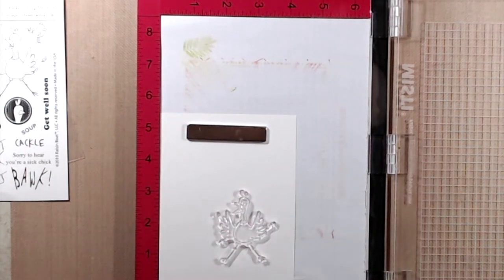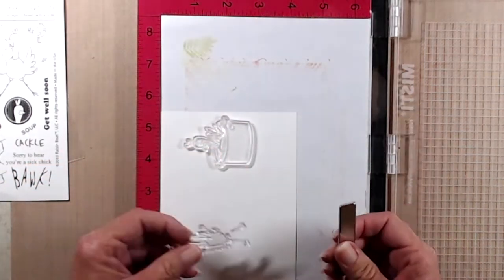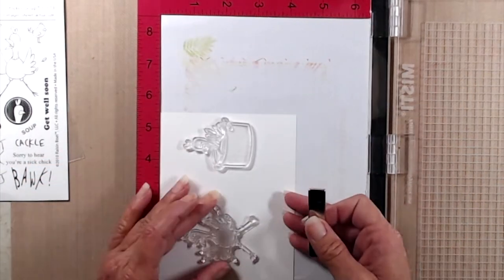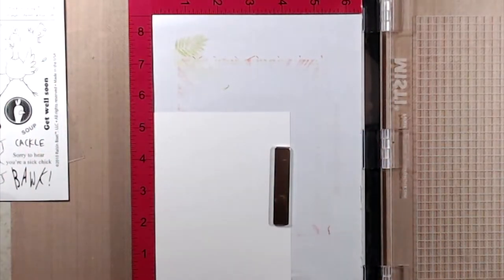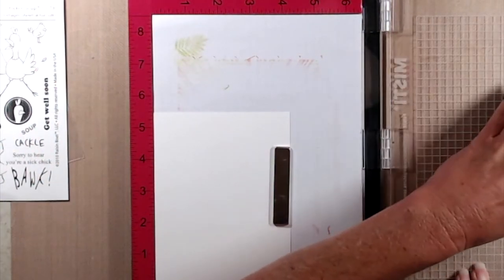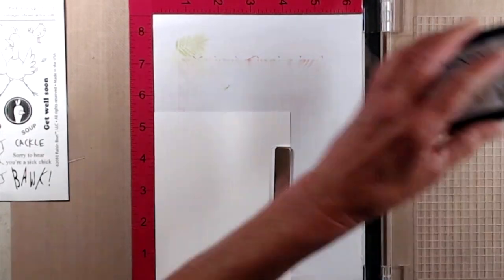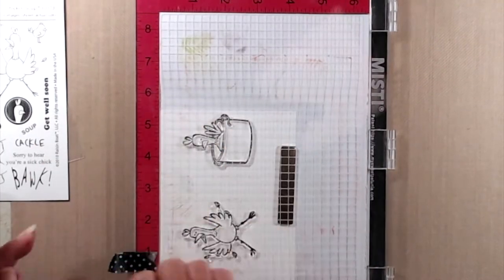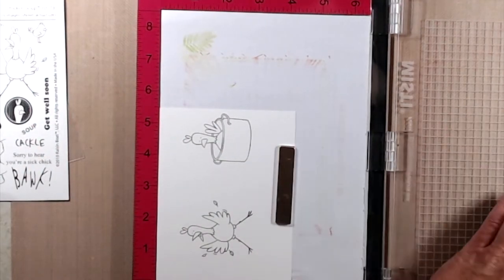After I stamped that background I set it aside and then I stamped out my little chickens. Since I'm going to be using Copic markers I stamped the images using Memento Tuxedo Black Ink onto Cougar Super Smooth cardstock. I'll make sure to have the chicken pack and all the other supplies listed in the description box below.